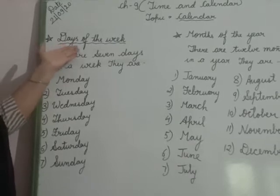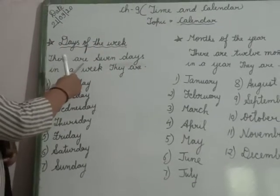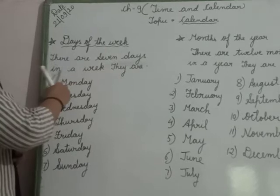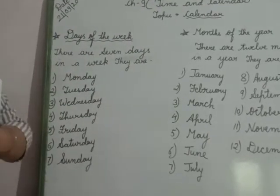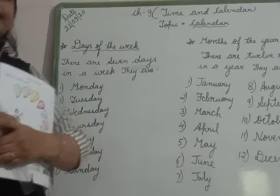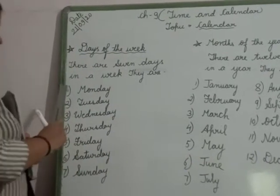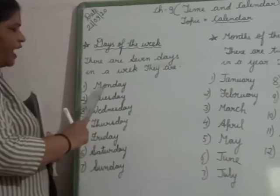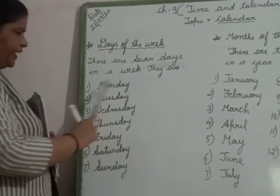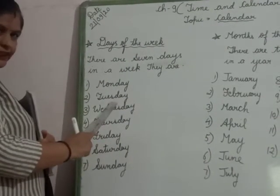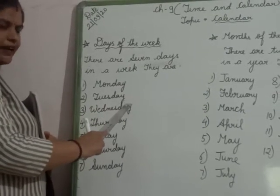The first one is days of the week. There are 7 days in a week. I hope everybody knows that there are 7 days in a week. The first one is Monday, M-O-N-D-A-Y. Second day, Tuesday, T-U-E-S-D-A-Y.